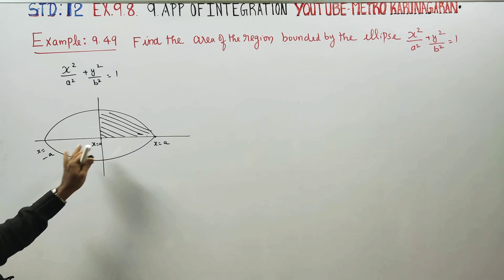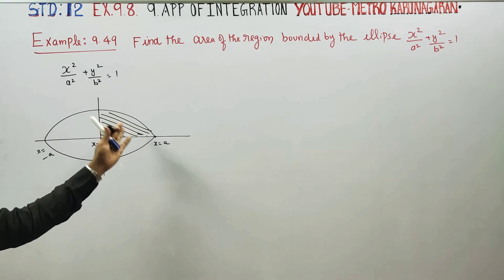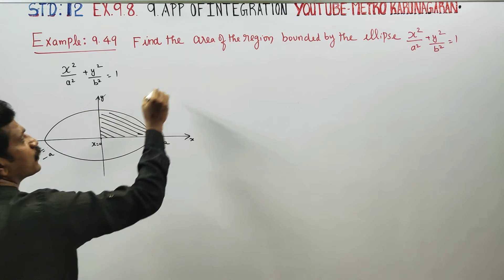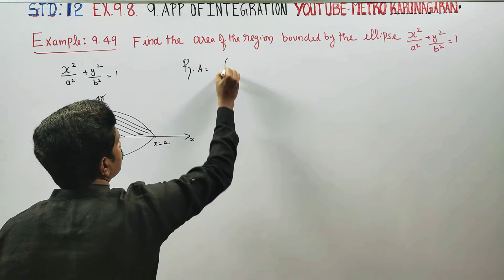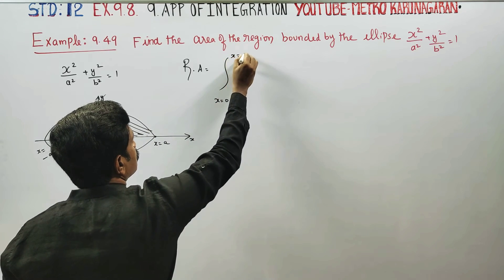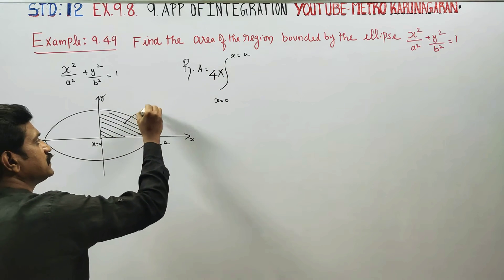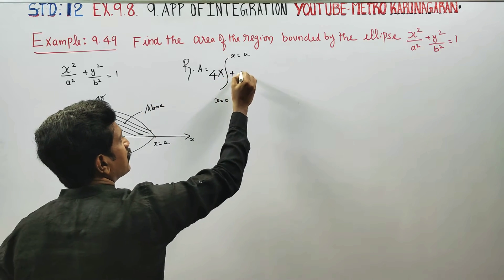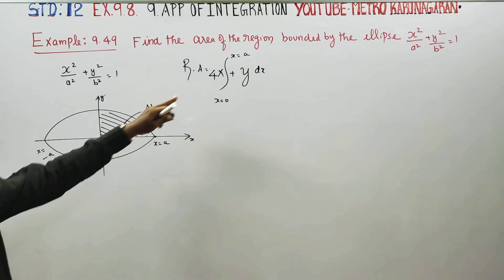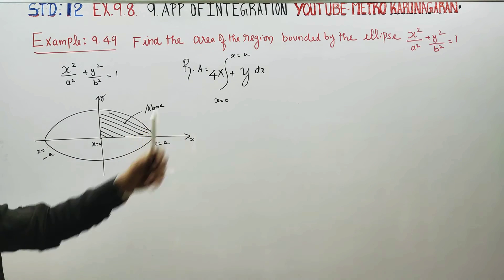It is a symmetric curve. At x = a, you have four pieces — four times the area above the x-axis gives the positive area. Using 4 elements, you can compute the total area if y is known.